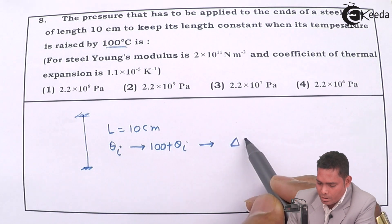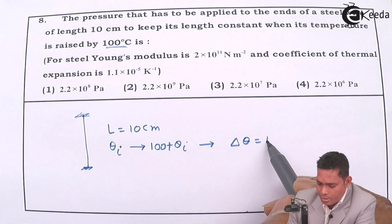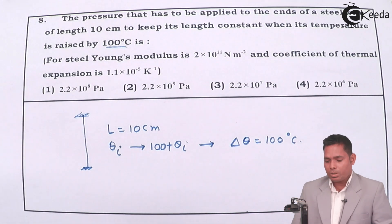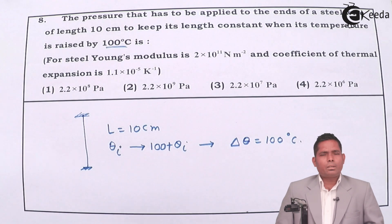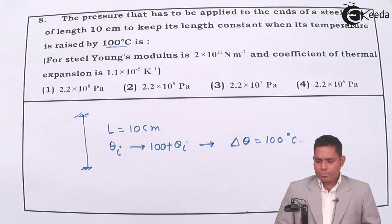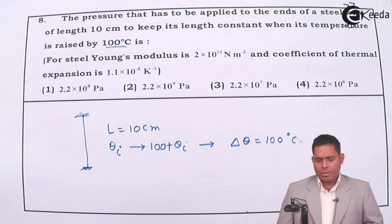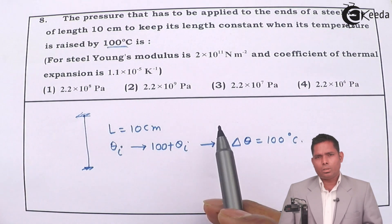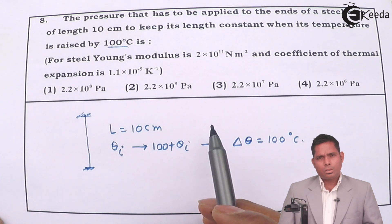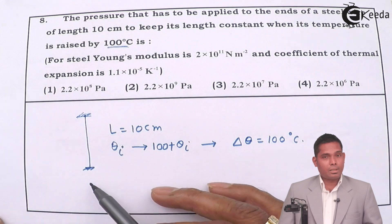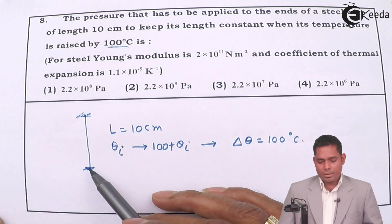The change in temperature Δθ is 100 degrees centigrade. From the coefficient of linear expansion — when you heat a substance, its temperature rises and there is a change in length. In the case of a rod or wire, its length will increase, so there is a linear expansion along the length.